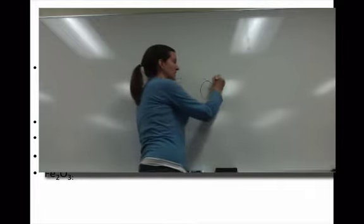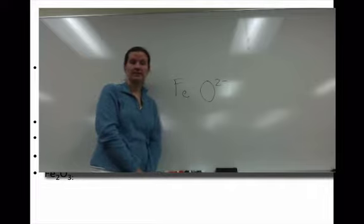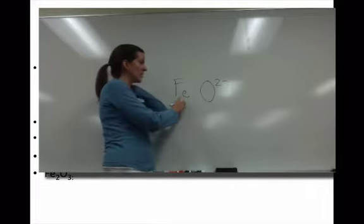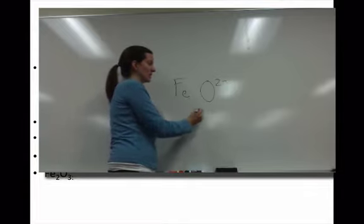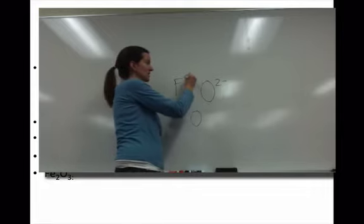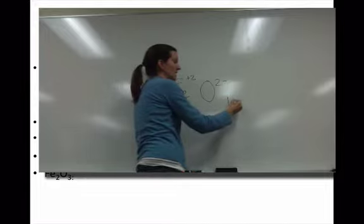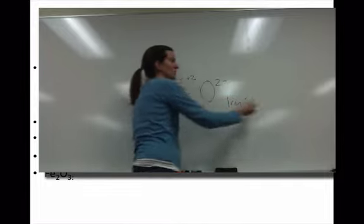We know oxygen has a charge of 2 minus. If your chemical formula is FeO, you then know what charge is on this guy because these are coming together to have an overall charge of 0. So that has minus 2. This has to have plus 2 to make it an overall charge of 0, meaning the name will be iron 2 oxide.